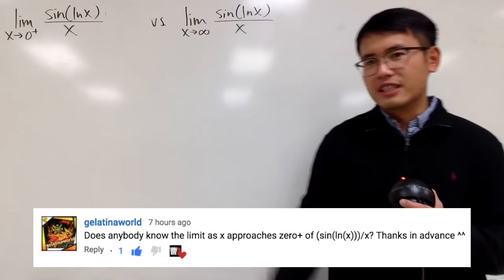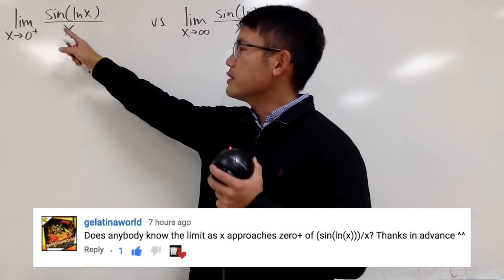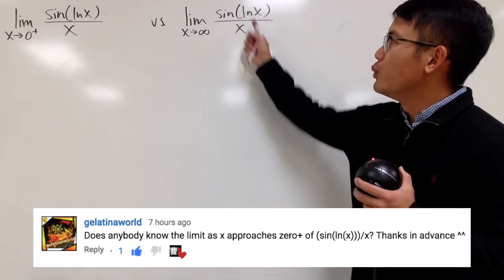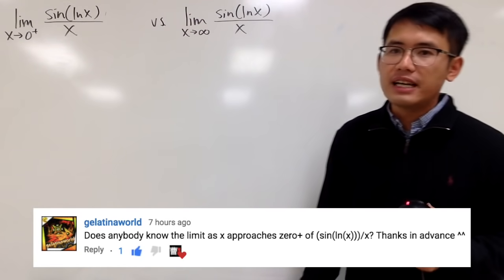Okay, we have two limits on the spot. The first one is the limit as x approaching 0 plus of sin of ln x over x. And for the second one, we have the same function, but we have the x approaching infinity instead.